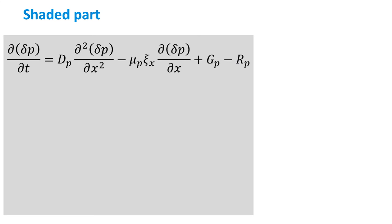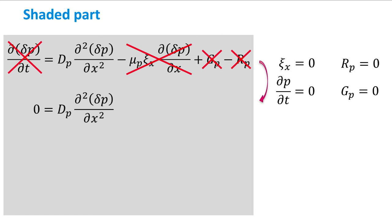We do the same for the shaded part. First removing several terms from the ambipolar transport equation, then solving the differential equation leading to the following equation, and here c3 and c4 are also integration constants. We now have obtained two equations with four unknown constants.